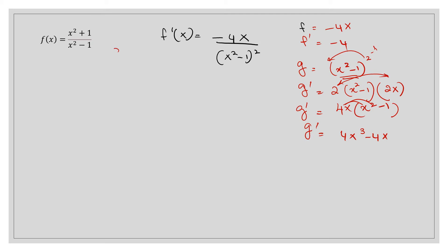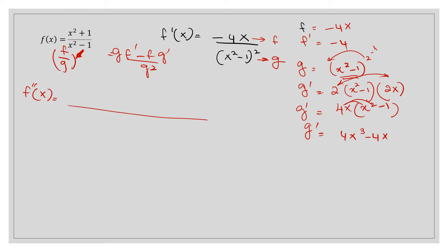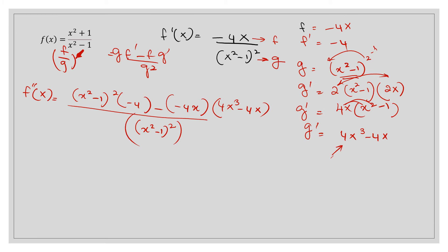Now apply the quotient rule formula: gf prime minus fg prime over g squared. So f double prime of x equals (x squared minus 1) squared times negative 4, minus (negative 4x) times (4x cubed minus 4), all divided by g squared, meaning (x squared minus 1) squared to the power squared.